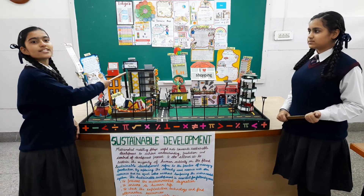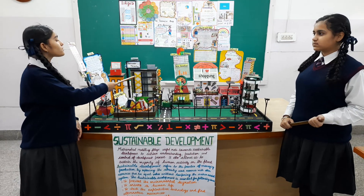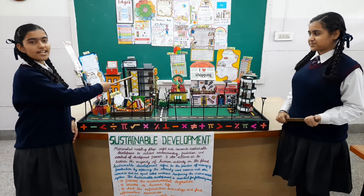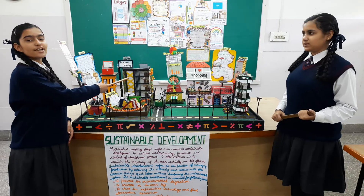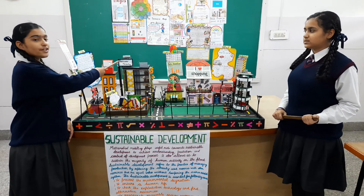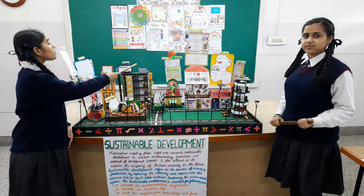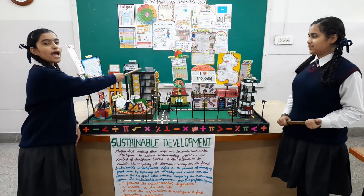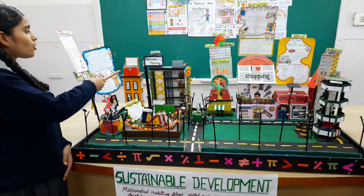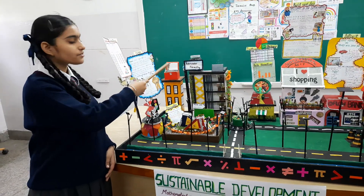This building is designed for sustainable development. There is more open space for ventilation and sunlight, which saves electricity. In this building, we have rainwater harvesting to conserve water. Solar panels are helpful to save money and electricity. A solar cooker is used to prepare healthy food.